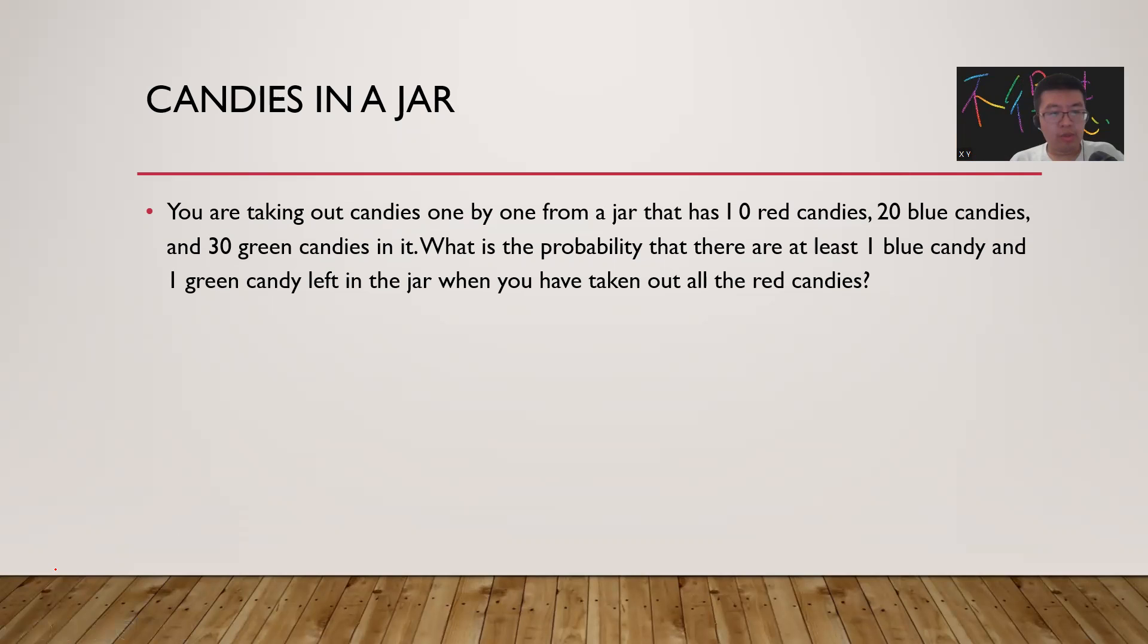Okay, so this problem is really not so difficult, but this sentence may give you some pressure. Let's think of a simpler question: what's the probability that the last candy is green? Simple question, right? It's very simple because it's random, so it should be 30 divided by 60, which equals 1/2.